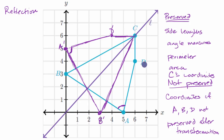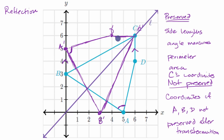You could also look at other properties — how different segments might relate to lines that were not being transformed. For example, before the transformation, segment CD is parallel to the y-axis. But after the transformation, C prime D prime is no longer parallel to the y-axis — in fact, now it is parallel to the x-axis. So when you have relationships to things outside of what was transformed, those relationships may no longer be true after the transformation.